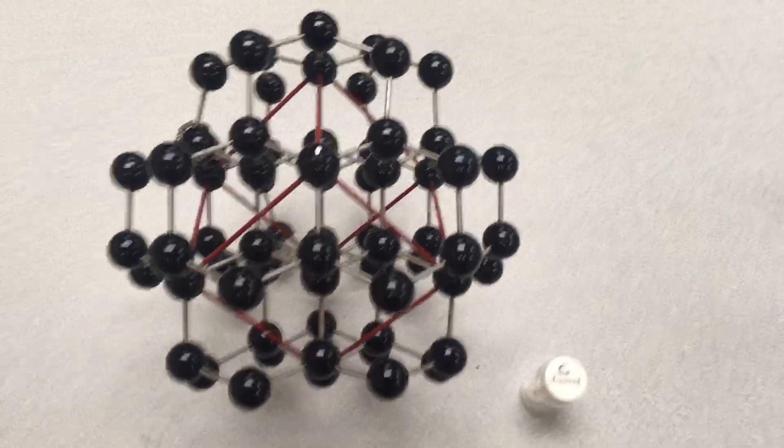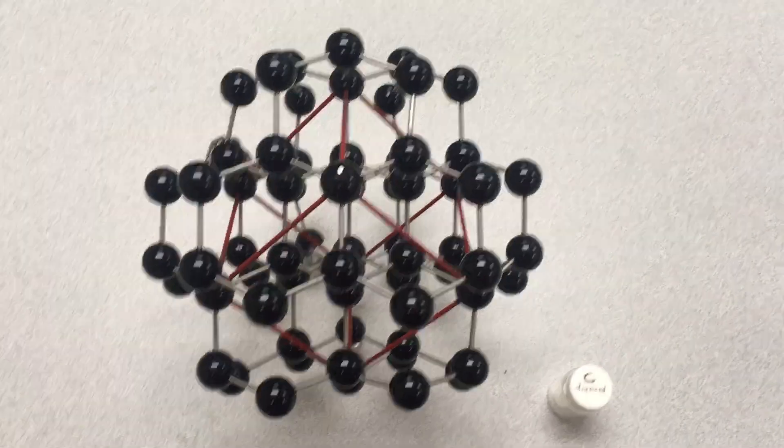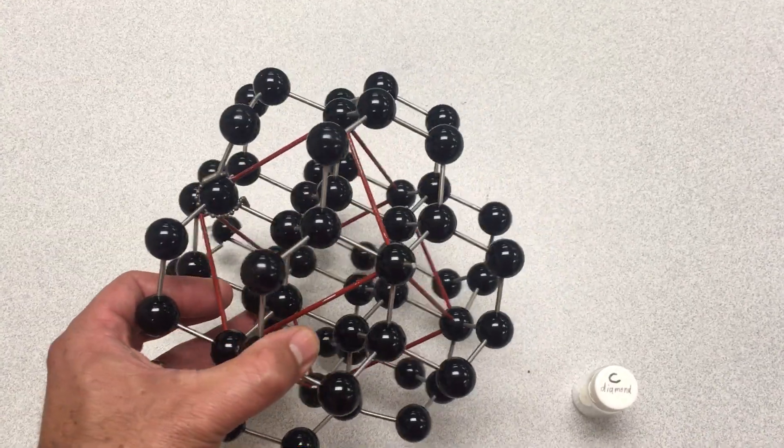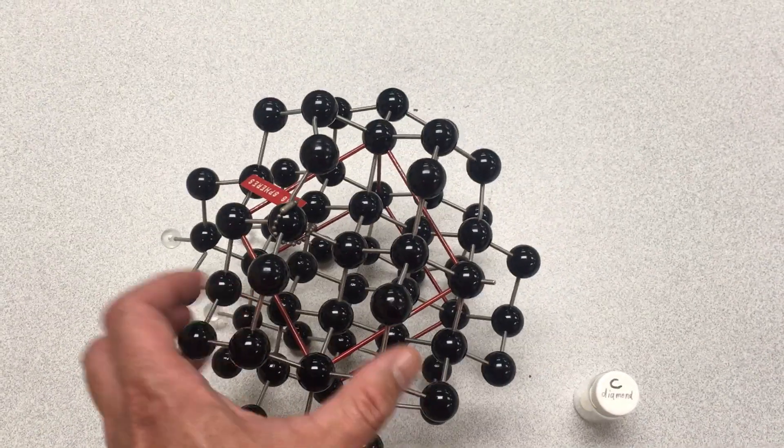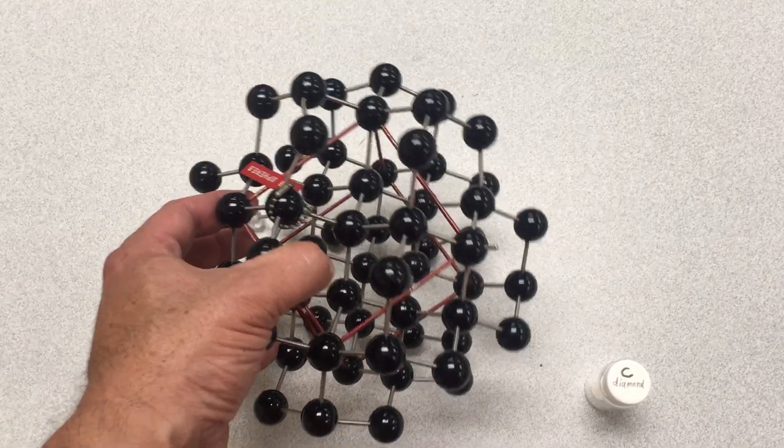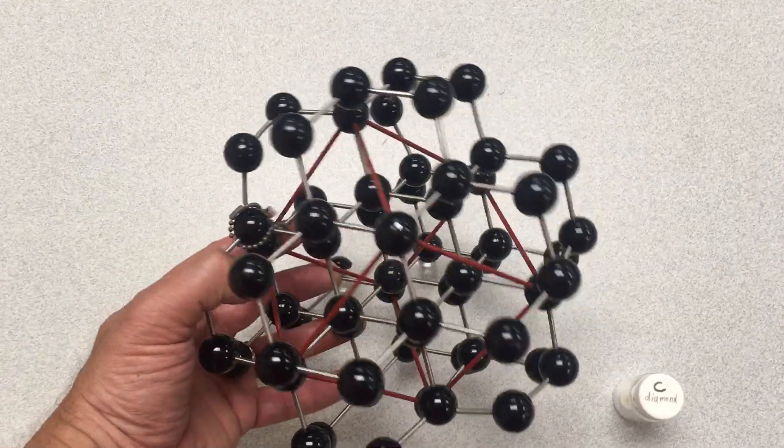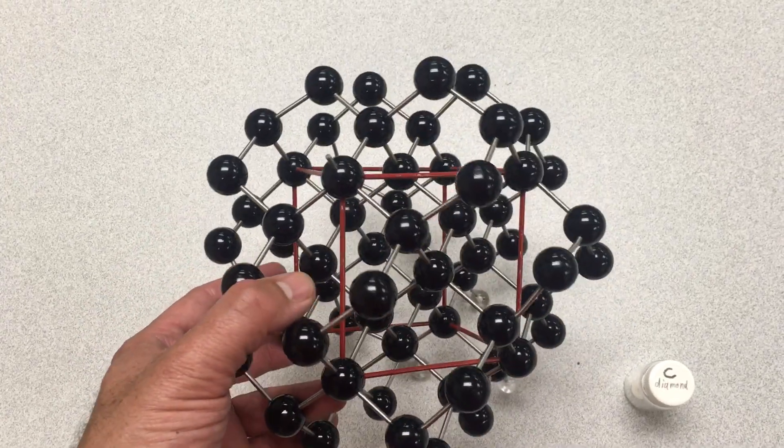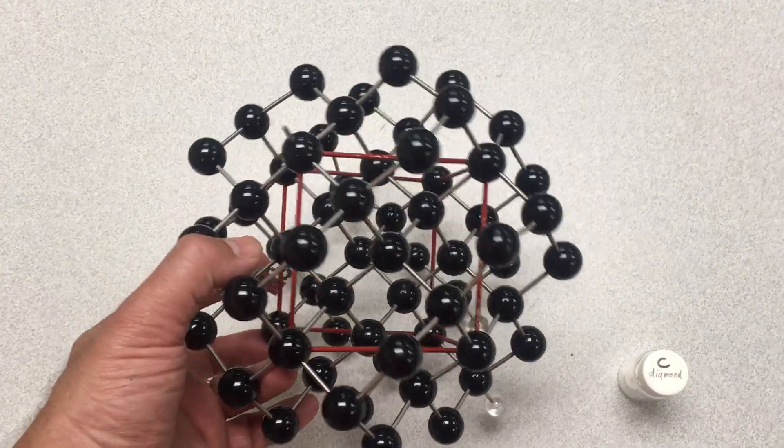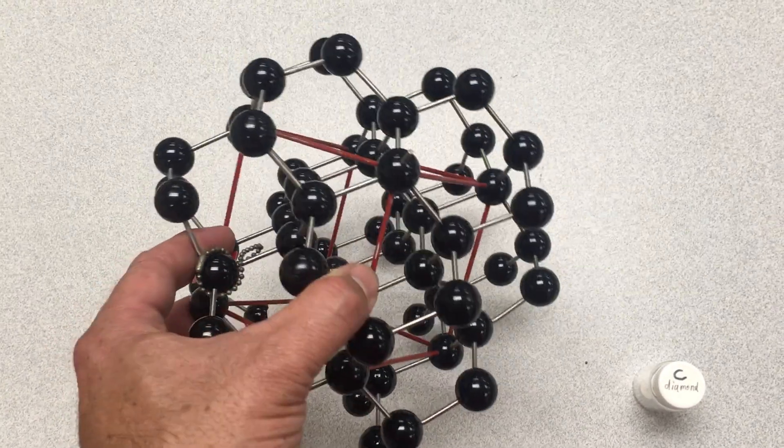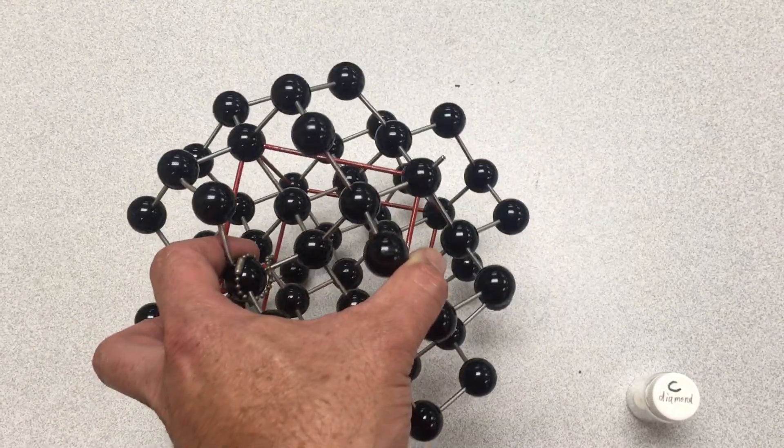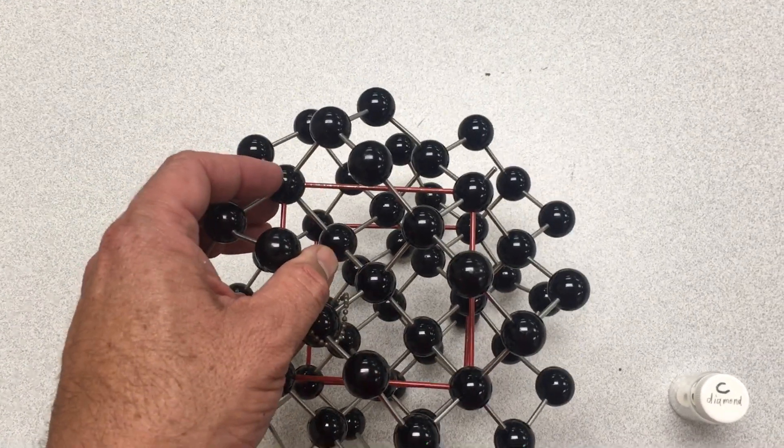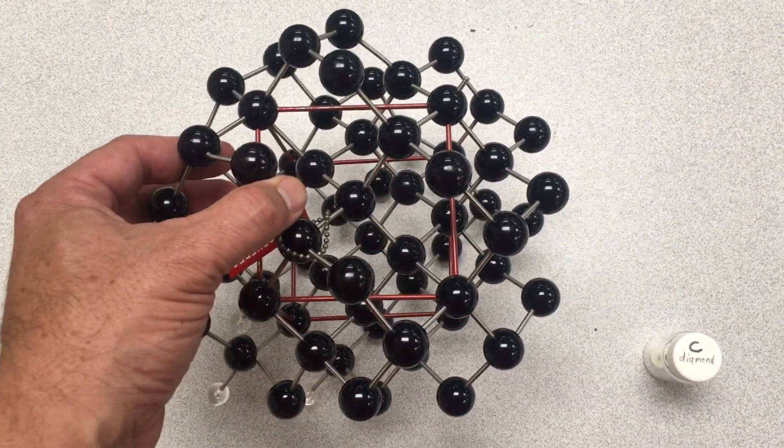This model here is the diamond structure. Carbon is all sp3 hybridized and singly bonded to other carbons in tetrahedral geometries. And you can see that the red lines here make the shape of a cube. This is because diamond has a cubic unit cell, that repeating unit.